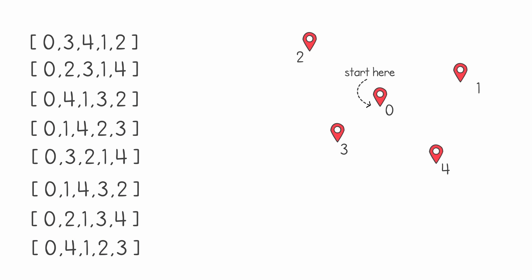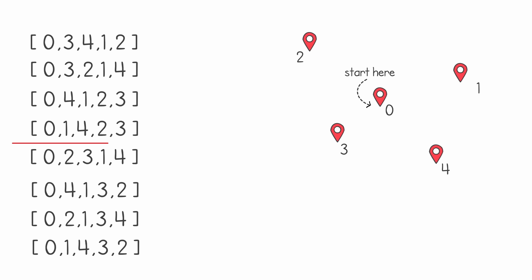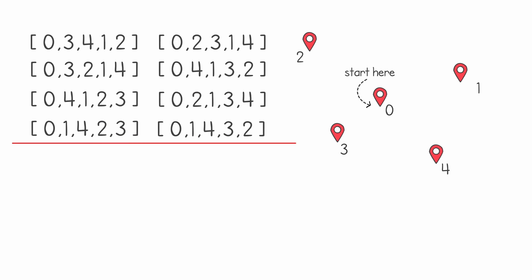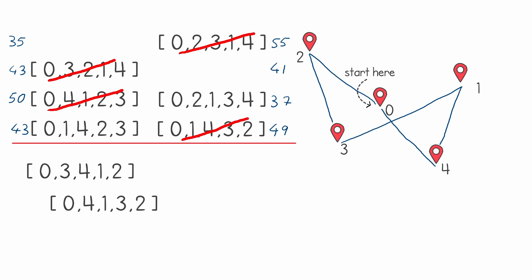Let's look at the first step — choosing survivors. We start with our initial population, where each entry represents a different route through all our points. We shuffle this list and then divide it into two equal halves, comparing each route with its counterpart. For example, the route [0, 3, 4, 1, 2] gives a total distance of 35, while its counterpart [0, 2, 3, 1, 4] gives 55 — so we eliminate the longer one. We do this for the entire list: between distances of 43 and 41 we eliminate the 43. At the end, we are left with the surviving routes.